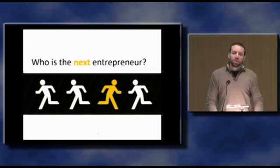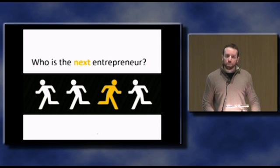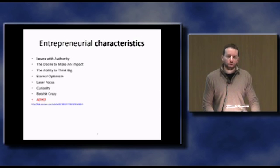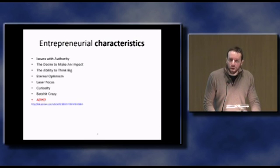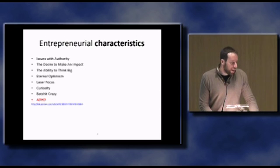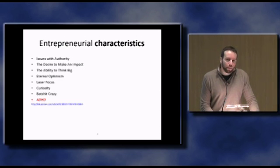But let's look at some characteristics that entrepreneurs have in common and share. Are there any specific characteristics? Yes, there are. Research shows that entrepreneurs have some quite not very popular characteristics or attributes. They have issues with authority. They desire to make an impact. They have the ability to think big. They have optimism, eternal optimism, and they can focus like laser blades. They are curious. They're crazy. And they have attention deficit disorder.